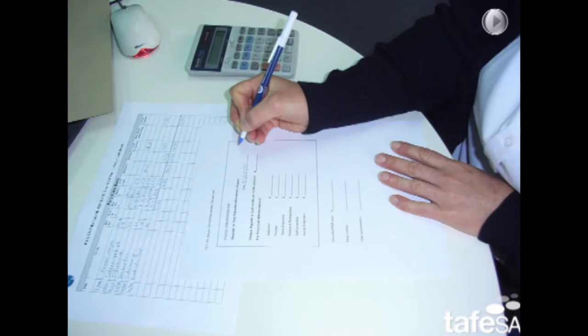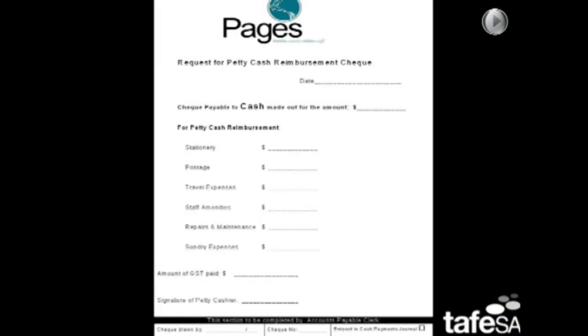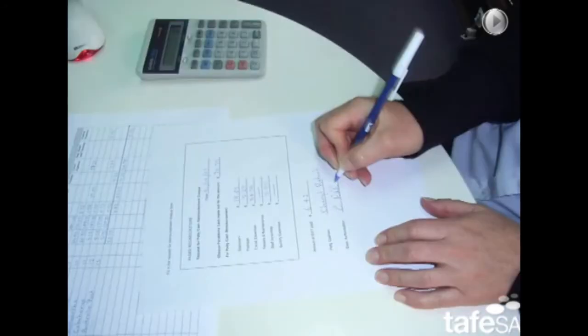Then you need to request from accounts payable a cash check. That is a check made payable to cash, rather than the name of a company. To do this you need to fill in the check request sheet, and all the details for this sheet can be taken directly from your petty cash book, because you have already done all of the necessary calculations.